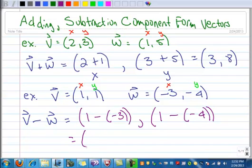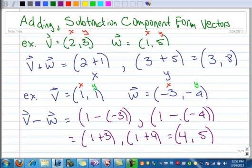and this is the same as 1 plus 3, this one is the same as 1 plus 4, and when we do that, we end up with 4, 5, so the components of that are 4, 5. That's adding and subtracting component form vectors.